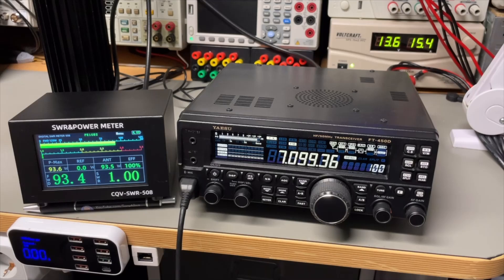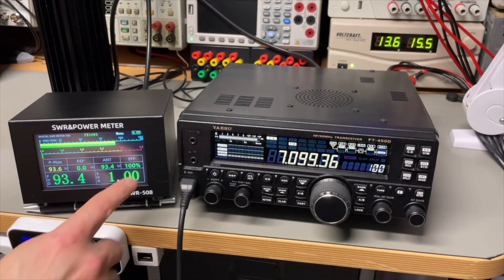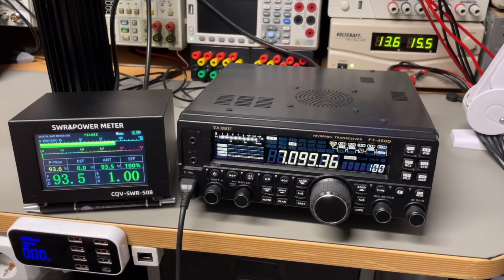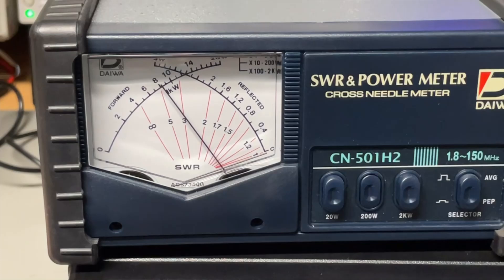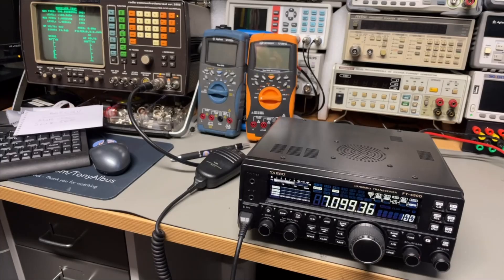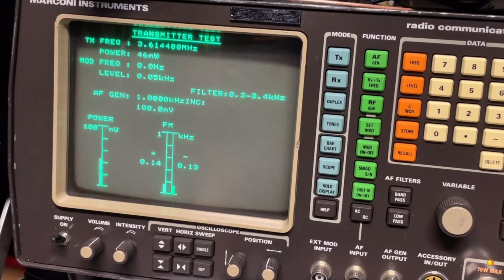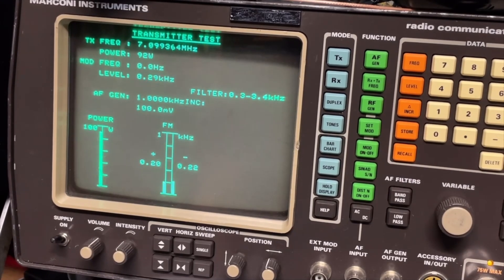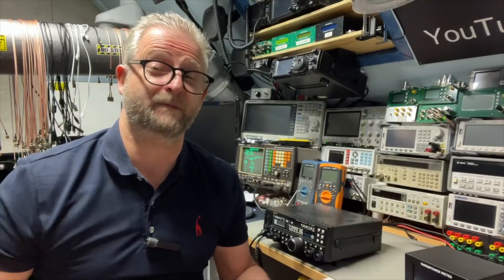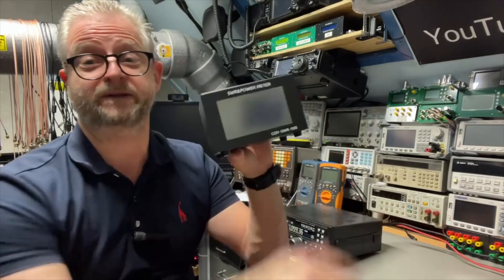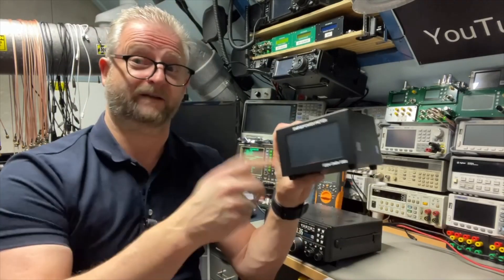Yeah and the dummy load of course is spot on. But the better test is of course what does the Marconi think. And the Marconi thinks it's 94 watts, 93 watts. So they all agree. The meter is well calibrated. So the Daiwas, the Marconi, and this power meter, they all agree. So how does it work in practice.